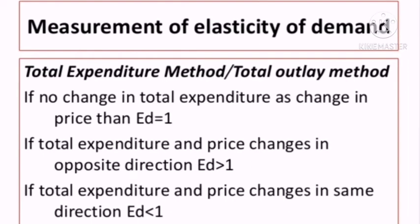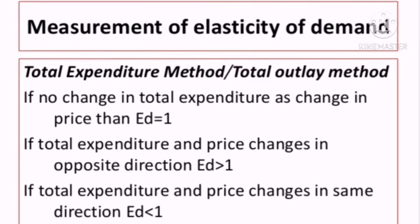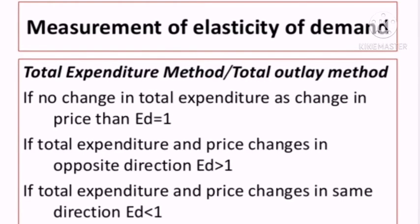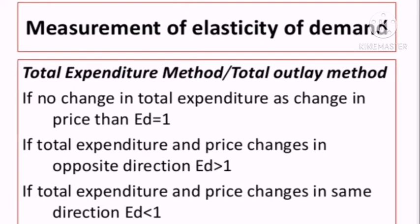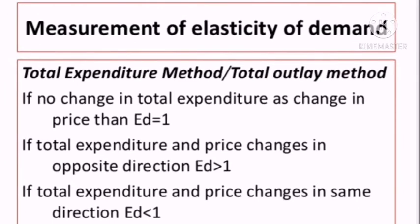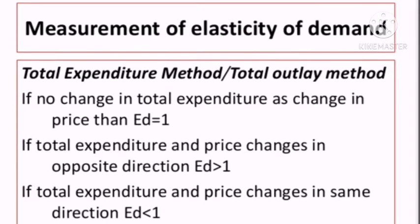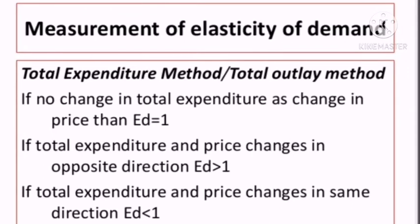If total expenditure and price change in the same direction, elasticity of demand is less than 1. These are the three conditions under the Total Expenditure Method.